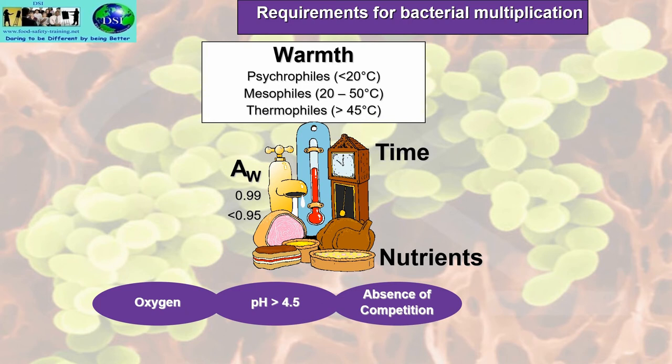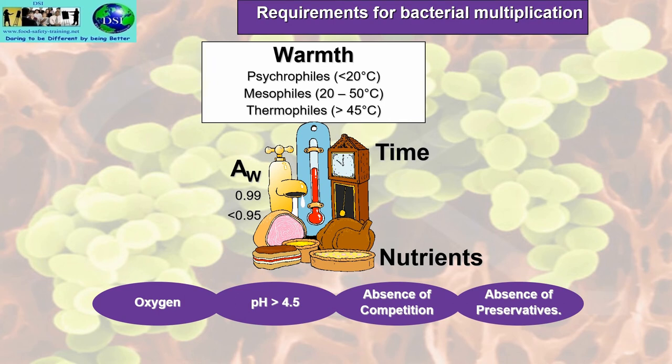The absence of competition is also required. Pathogens are not very competitive — if spoilage bacteria are present, you won't find any pathogens there either. Going back to oxygen, bacteria can survive with small, medium, and high amounts of oxygen. And the absence of preservatives — any preservatives present will stunt or prevent the growth of bacteria.